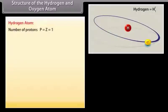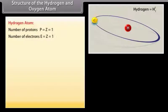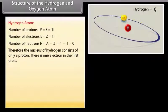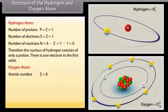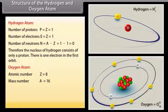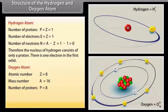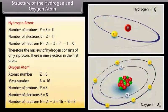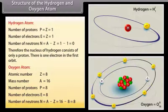Structure of the hydrogen and oxygen atom: Hydrogen atom — number of protons P = Z = 1; number of electrons E = Z = 1; number of neutrons N = A - Z = 1 - 1 = 0. Therefore, the nucleus of hydrogen consists of only a proton and there is one electron in the first orbit. Oxygen atom — atomic number Z = 8, mass number A = 16; number of protons P = 8; number of electrons E = 8; number of neutrons N = A - Z = 16 - 8 = 8.